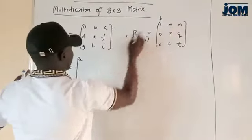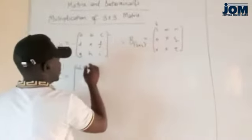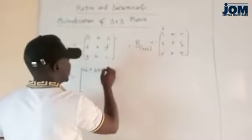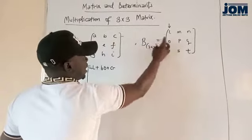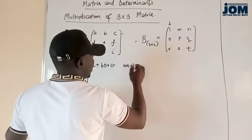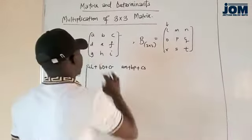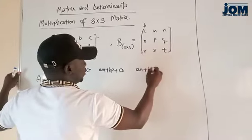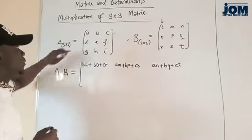A multiplies L, plus B multiplies O, plus C multiplies R. Now we are done with one element. Now we go again: A multiplies M, plus B multiplies P, plus C multiplies S. We go again: A will multiply N, plus B will multiply Q, plus C will multiply T.